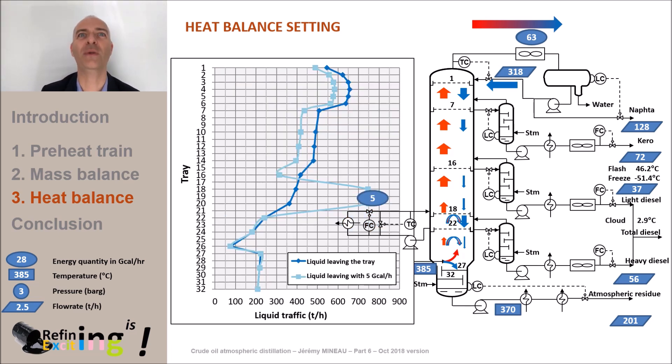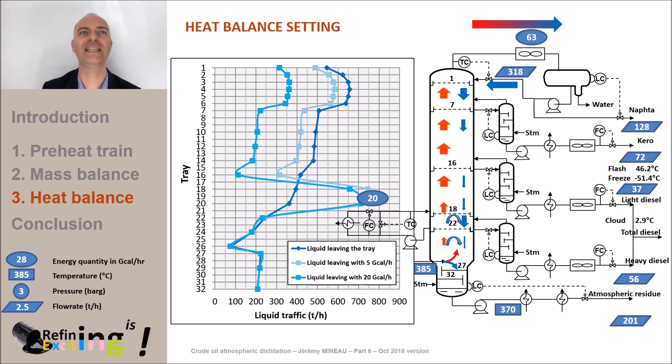5 giga calories per hour is good, but can we do better? Let's be ambitious and this time let's extract 20 giga calories per hour from the column. Like just before, more gas is condensed when it meets the cold liquid that is re-injected. So, less gas rises in the tower, so less liquid returns to the tower through the reflux. When removing 20 giga calories per hour, the condenser duty drops by 20 giga calories per hour, and the reflux goes down from 318 to 207 tons per hour. But what are the impacts on the product qualities?